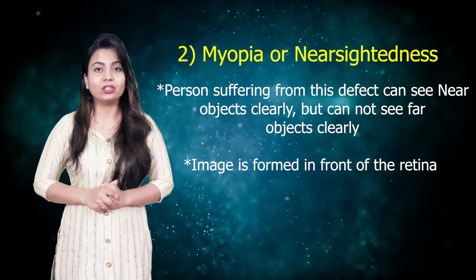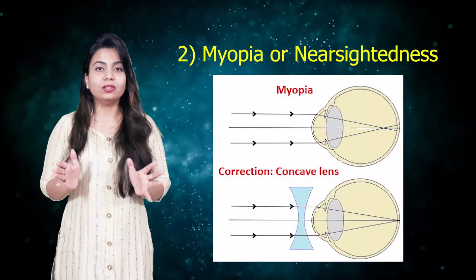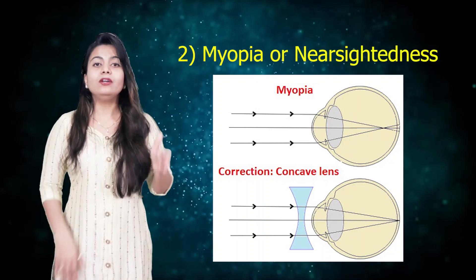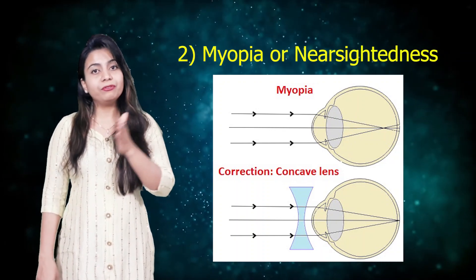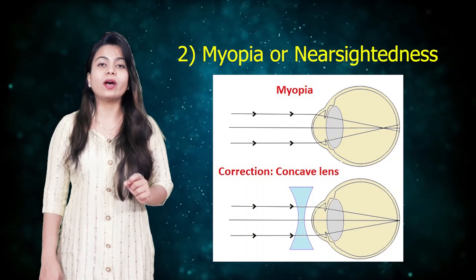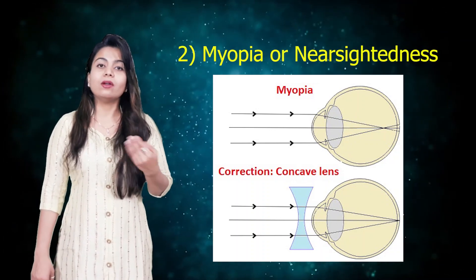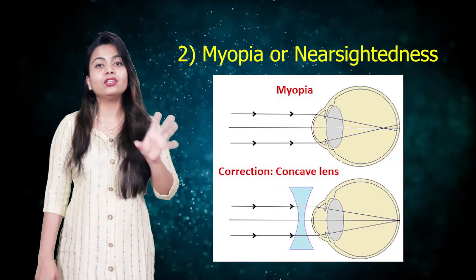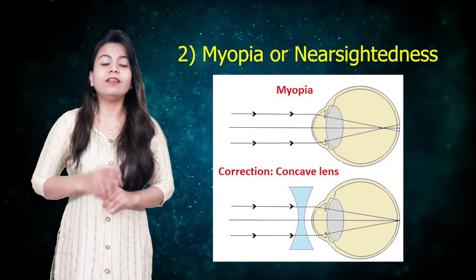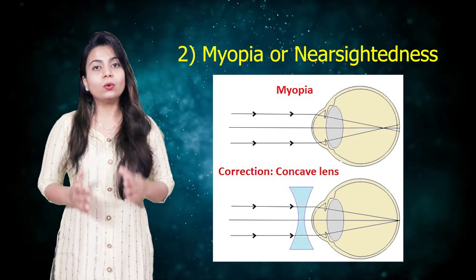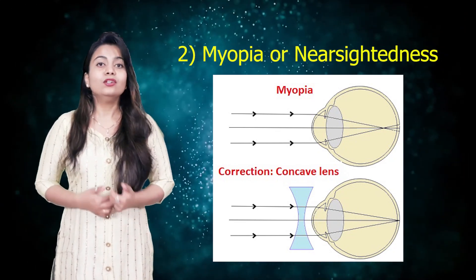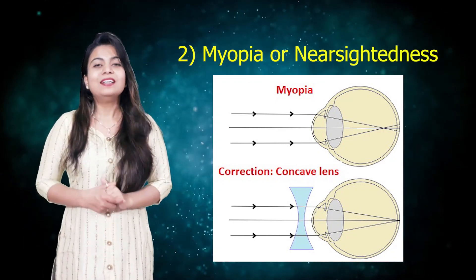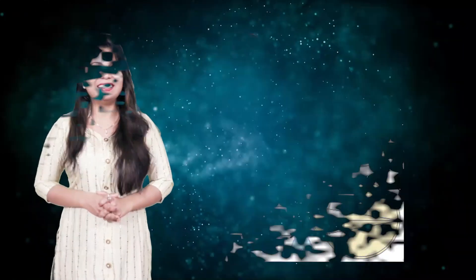I will show you one picture. Look — this is the case of myopia. The image, instead of forming on the retina, is formed in front of the retina. That's why students cannot see clearly on the board. Now look at the second picture — it shows the correction. In this, a concave lens is used. As we all know, concave lens diverges the light rays, so it helps to form the image on the retina. In this way, myopia is corrected.